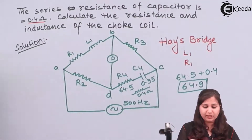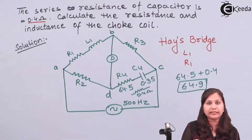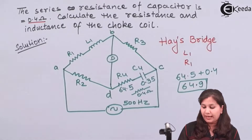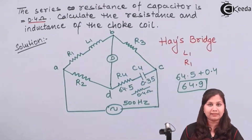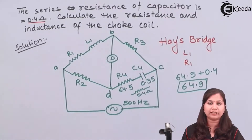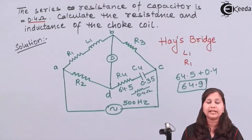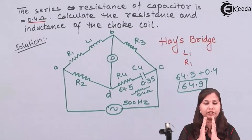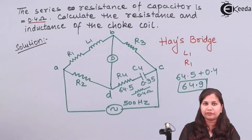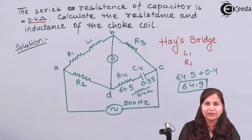So in this way we can measure the value of an inductance using the Hays bridge. We derived the balance equation Z1·Z4 = Z2·Z3, obtained expressions for L1 and R1, and substituted the known values to get L1 = 0.63 H and R1 = 141.1 Ω. I hope this problem is clear to you.